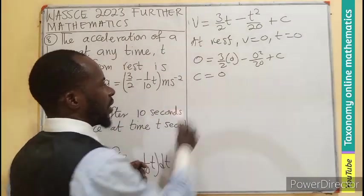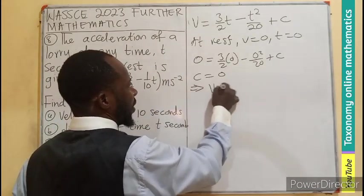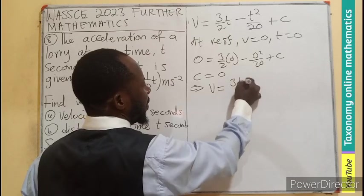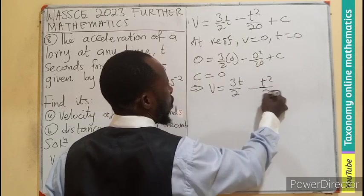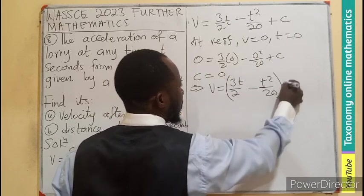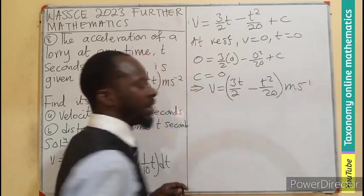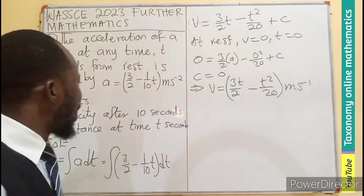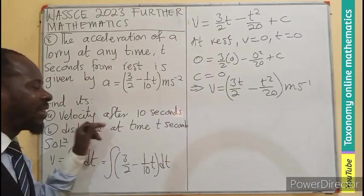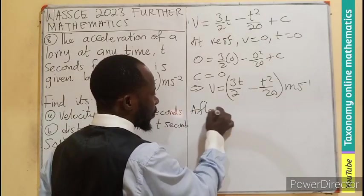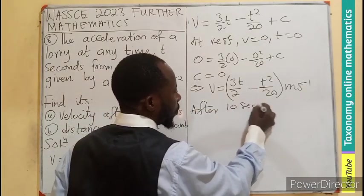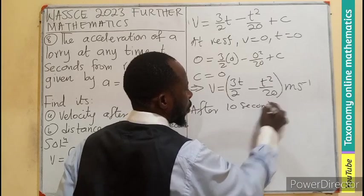Hence, we can just say that this implies that your velocity is going to be 3t on 2 minus t squared on 20 meter per second. That is the velocity. Now, but we have to find it after 10 seconds.